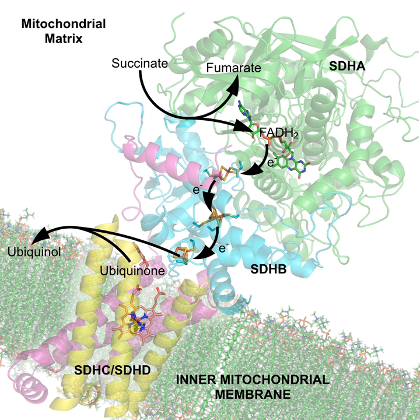An inactive enzyme without the cofactor is called an apoenzyme, while the complete enzyme with cofactor is called a holoenzyme. Some enzymes or enzyme complexes require several cofactors.